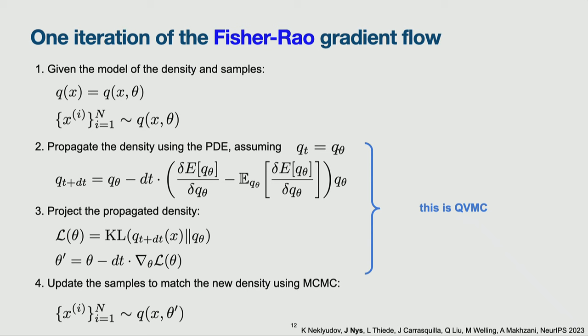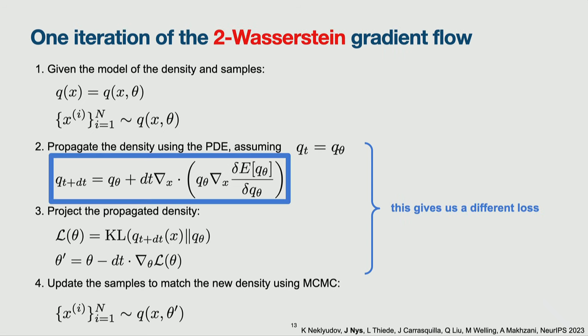If you do variational Monte Carlo and want to implement this algorithm, it's almost a one-line change. Given my VMC algorithm: sample from a distribution Q, imaginary-time-evolve the distribution, project back to the variational manifold, and loop. What I'm telling you is you can change just this one step — go along a different direction on the variability distribution manifold — and then project back the same way.